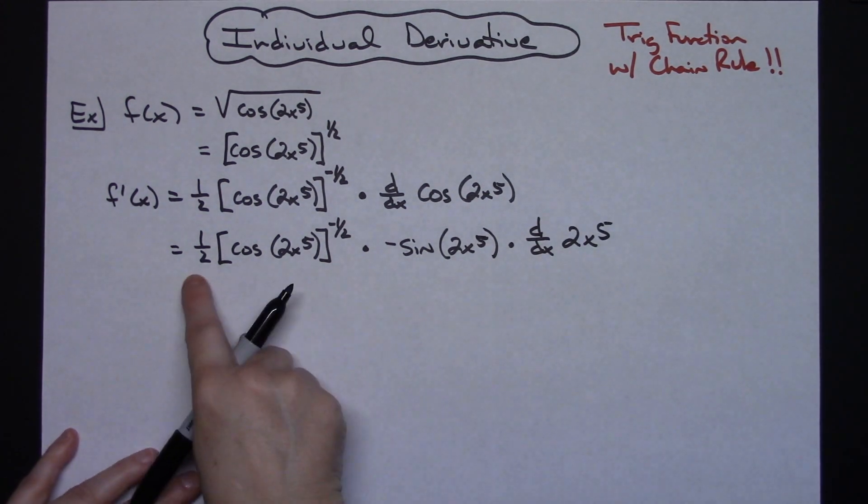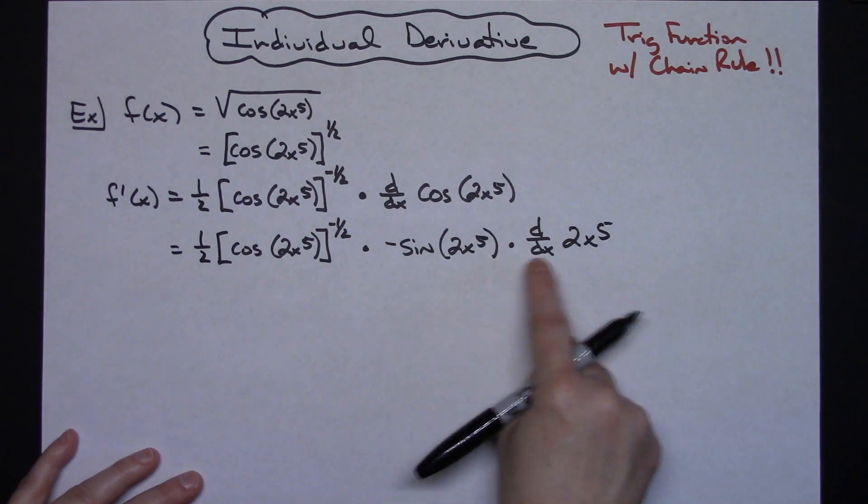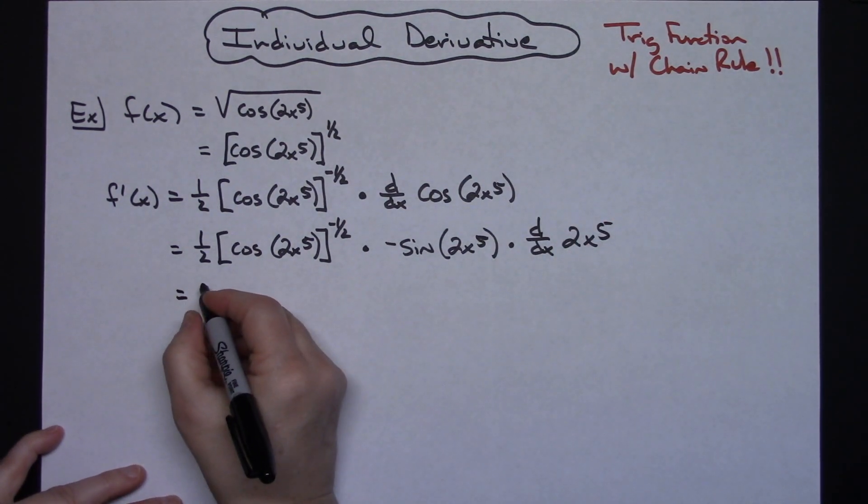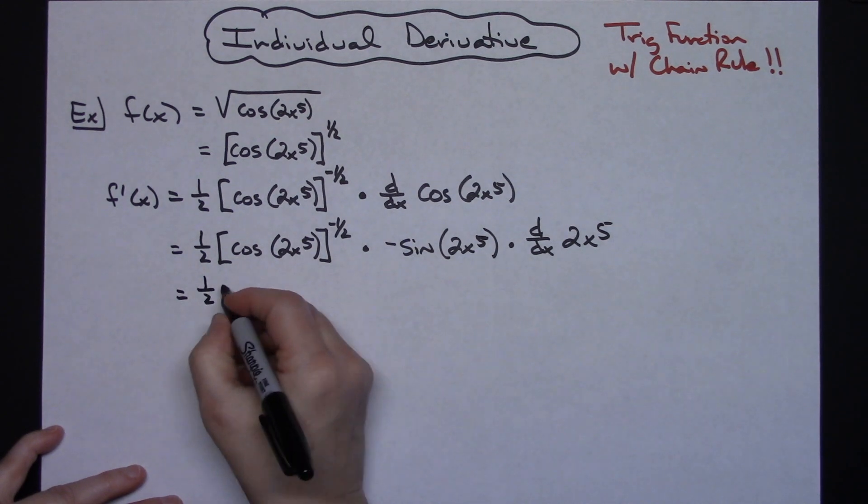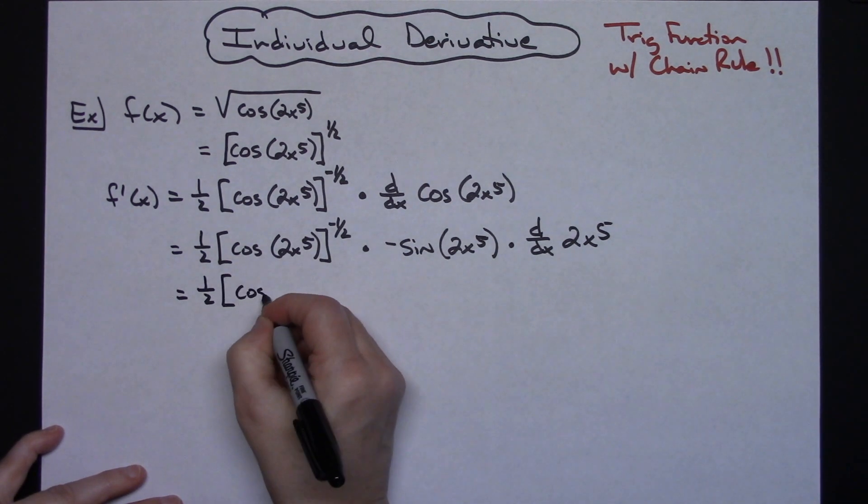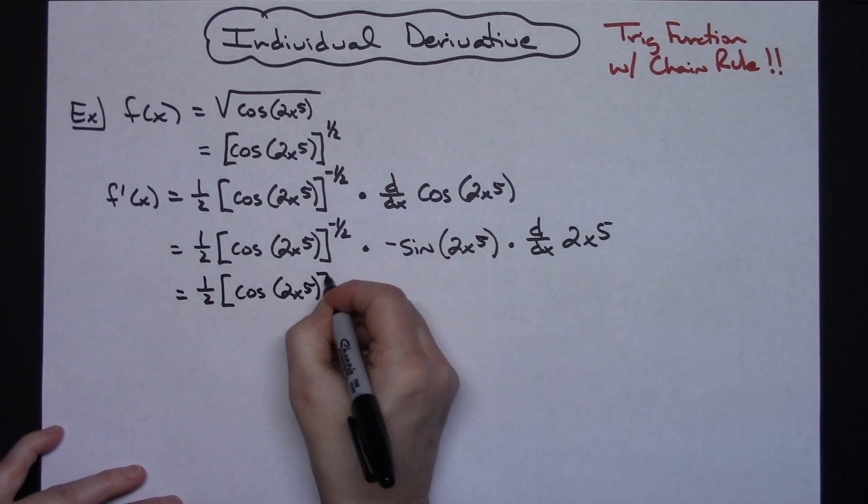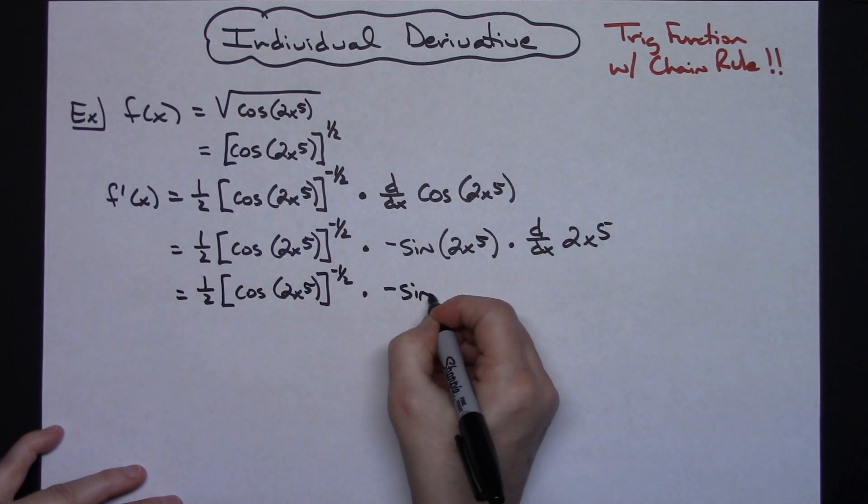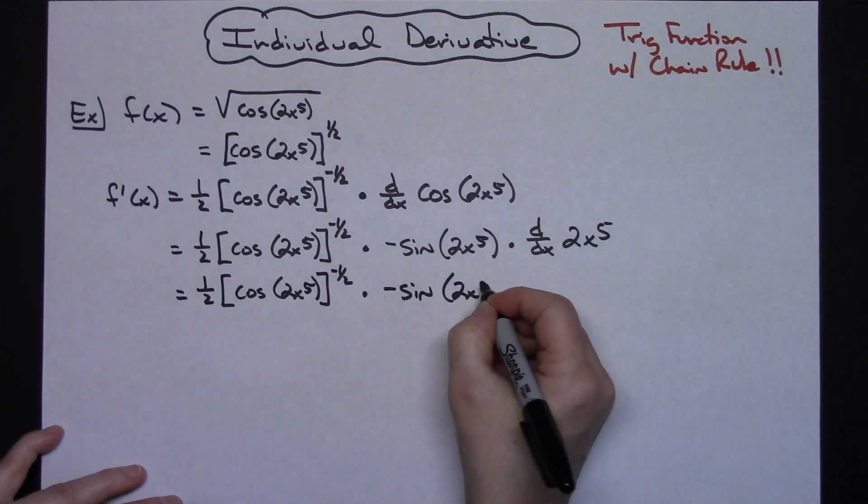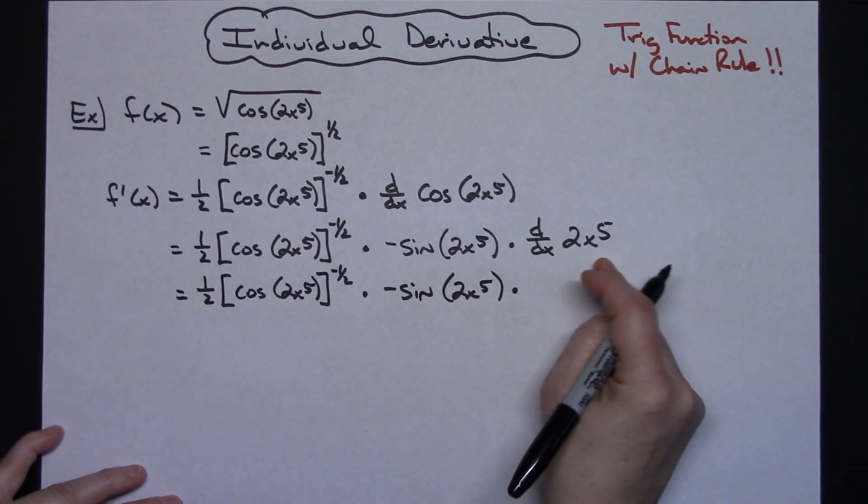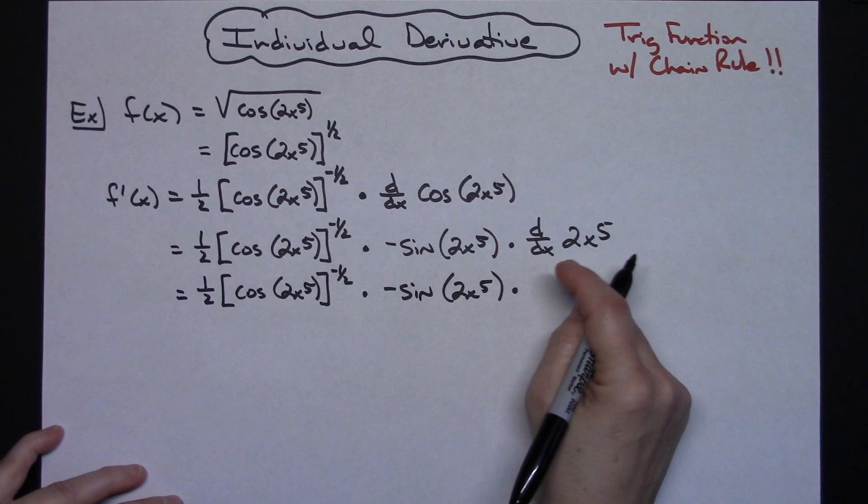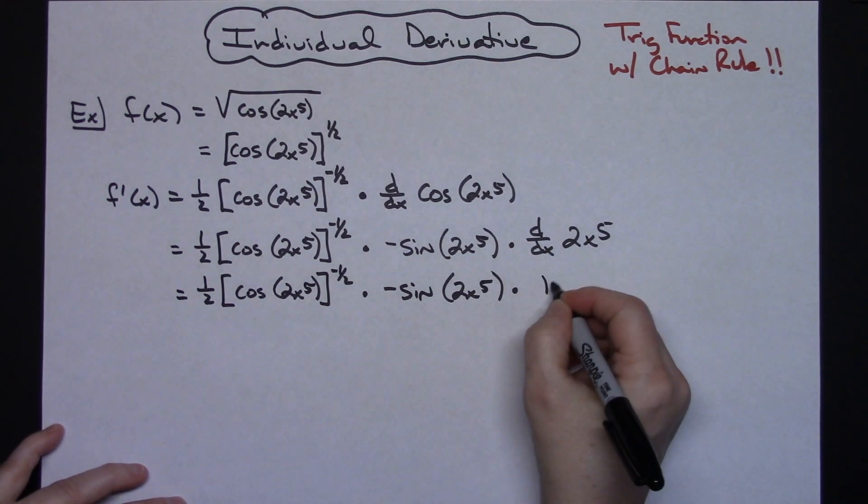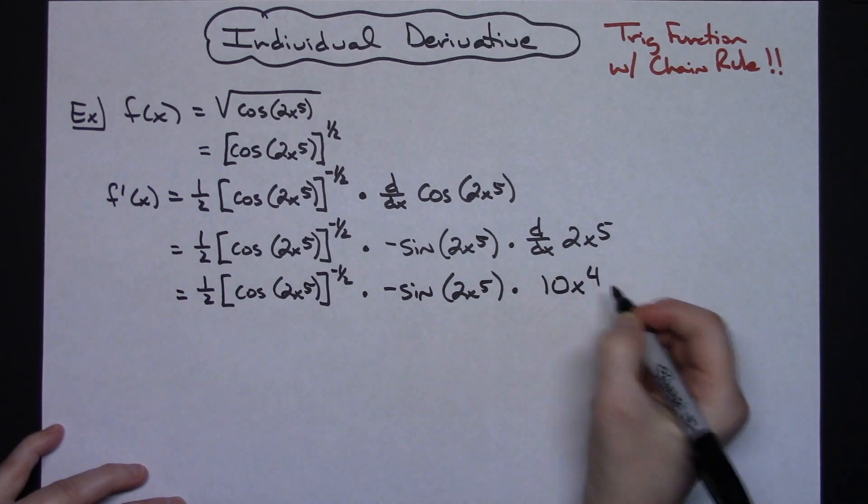On my last step I'm going to keep everything up to here the same and I will take this derivative at the end. So I'm going to have 1 half times cosine 2x to the fifth raised to the negative 1 half minus sine 2x to the fifth. Now I'm actually going to take the derivative here, which now this is just a single polynomial so I have no more chain rules here. I will just strictly have 10x to the fourth.